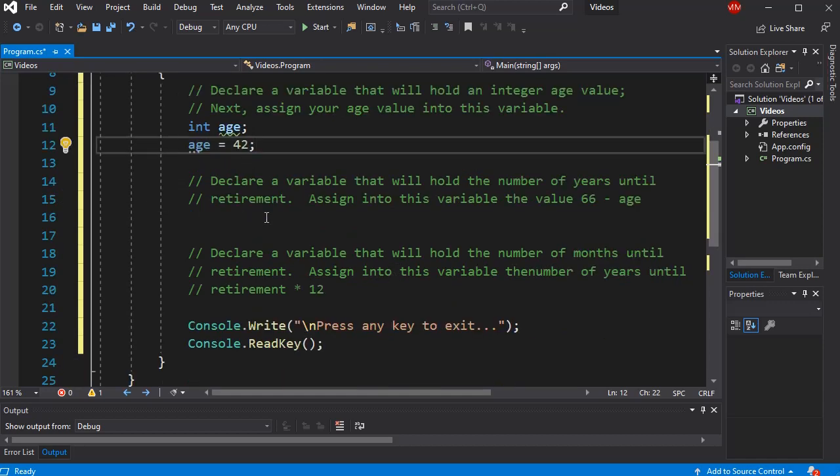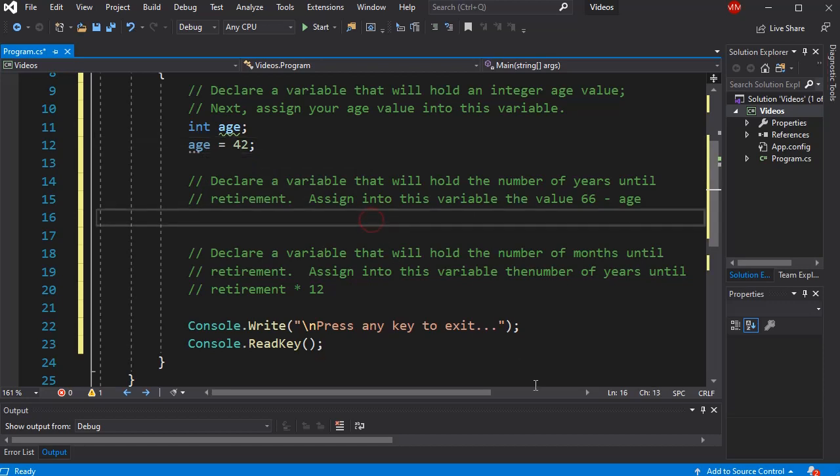All right. The next question said, declare a variable that will hold the number of years until retirement. Assign into this variable the value 66 minus your age. So we're going to use this value that we stored in our variable in the next expression. So first, let's declare a variable that will hold the number of years until retirement. Let's make this an int as well.